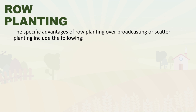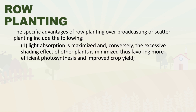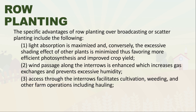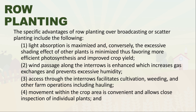The specific advantages of row planting over broadcasting or scatter planting include the following: light absorption is maximized and excessive shading is minimized, favoring more efficient photosynthesis and improved crop yield. Wind passage around the inter-rows is enhanced, increasing gas exchange and preventing excessive humidity. Access through the inter-rows facilitates cultivation, weeding, and other farm operations including hauling. Movement within the crop area is convenient and allows close inspection of individual plants, and visibility is enhanced.